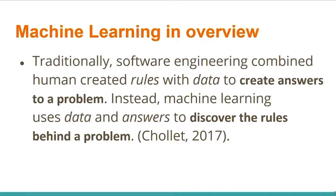In machine learning, we pretend we already have answers and we have the data available, and we ask: can we figure out the rules behind the problem? Because if you really want to solve a problem, you need to figure out the rules — the patterns behind a particular problem. This was first observed by Chollet in 2017. That is the difference between the traditional approach and machine learning.